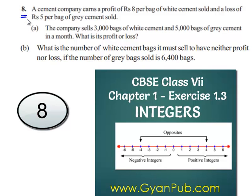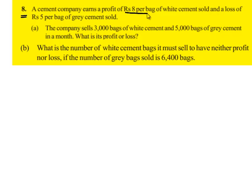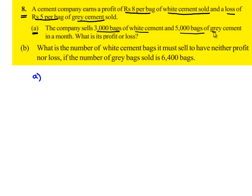We'll see the eighth question. A cement company earns a profit of Rs.8 per bag of white cement sold and a loss of Rs.5 per bag of grey cement sold. The first part is: the company sells 3,000 bags of white cement and 5,000 bags of grey cement in a month. What is its profit or loss?